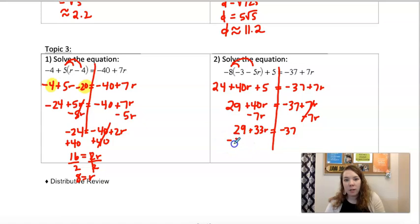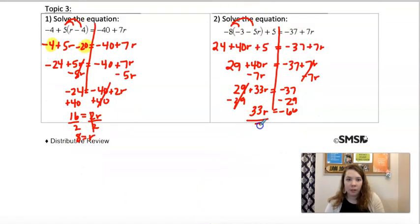So then we'll subtract 29 from both sides, which will give us negative 66. And divide by 33 should give us negative 2.